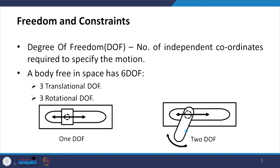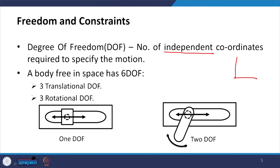The technical definition of degrees of freedom is the number of independent coordinates required to specify the motion — 'independent' being the key word. A body in space has 6 degrees of freedom: 3 translational and 3 rotational. So an object in space can be described with 3 translations (x, y, z) and 3 rotations.